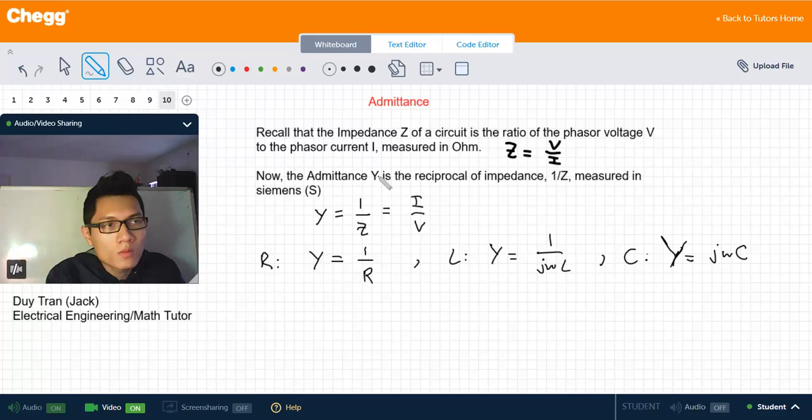Now, the admittance we define is Y, which is the reciprocal of the impedance: 1 over Z, measured in siemens. So Y equals 1 over Z, or the inverse of this, which is I over V.